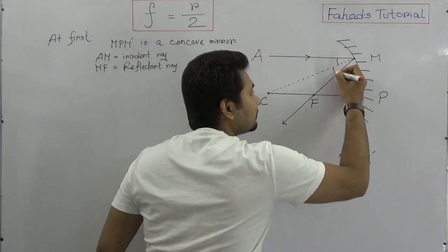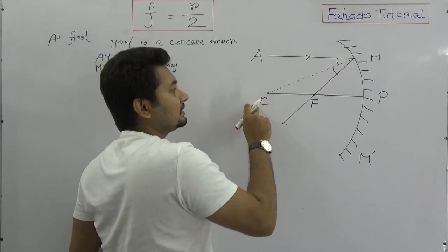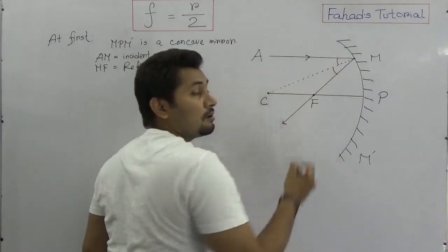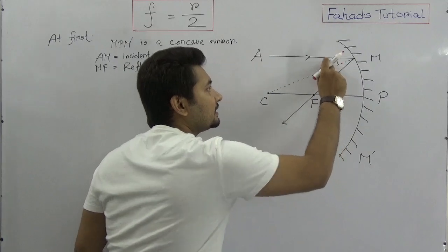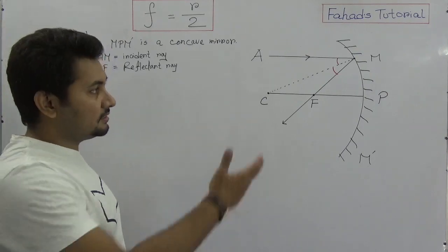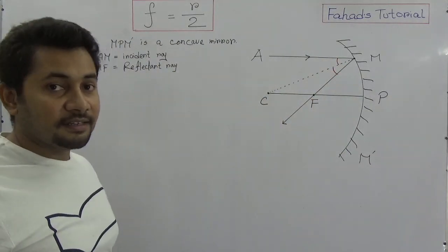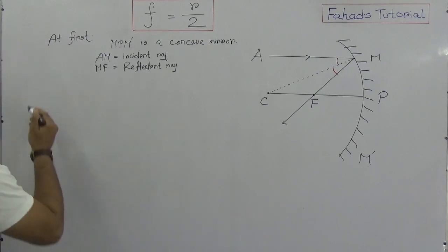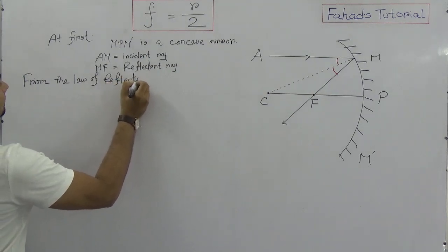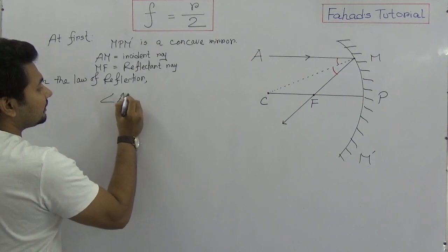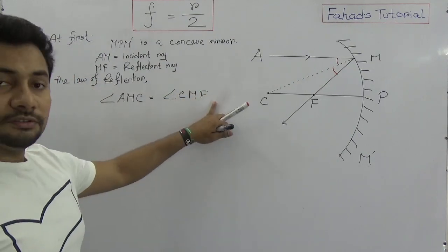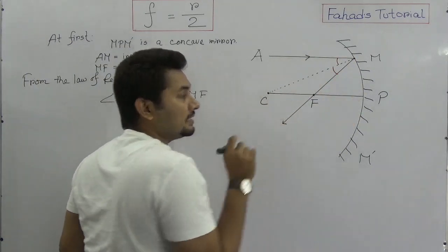Can we say that angle AMC and angle CMF are equal? Yes, because according to the law of reflection, if MC is the normal, the incident and reflected angles are the same. So from the law of reflection, we can say that angle AMC equals angle CMF. Now, since AM and CP are parallel lines, we can apply geometry.